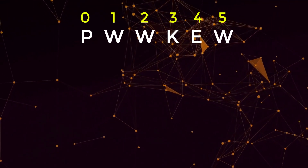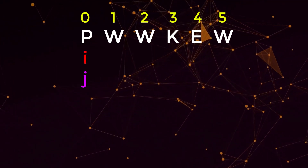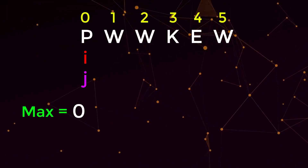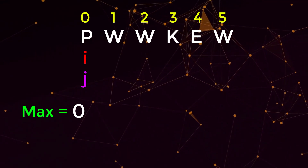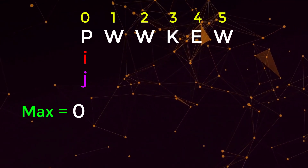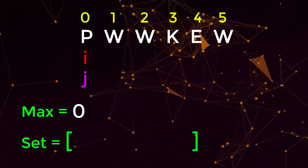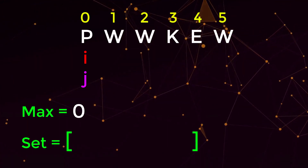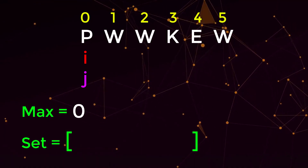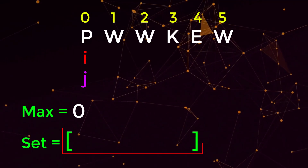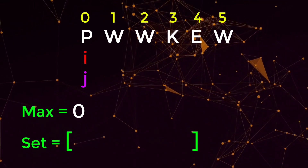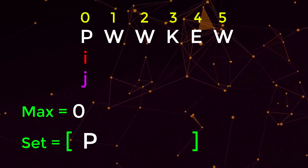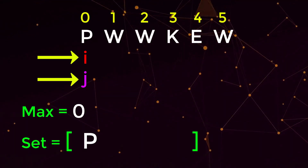Let's walk through a full example of how this sliding window algorithm works. We're going to have an i and j pointer both starting at index zero. Additionally, we have a max variable to keep track of the maximum length substring with no repeating characters, and a set to keep track of the unique characters in our window. Right now our i pointer is looking at character 'p' — we ask: has 'p' been seen? The set is empty, so no it hasn't, so we're going to add 'p' to our set and compute the length of the window.